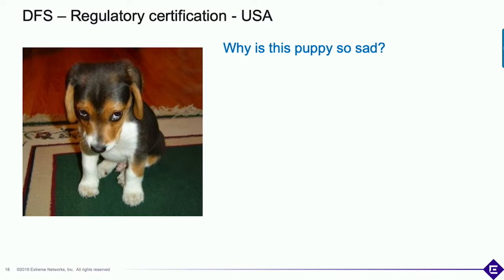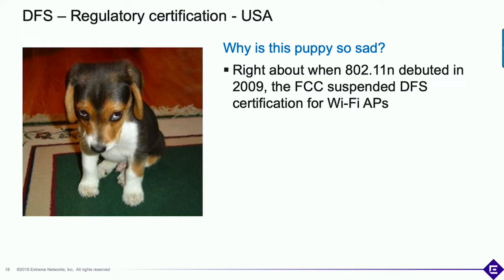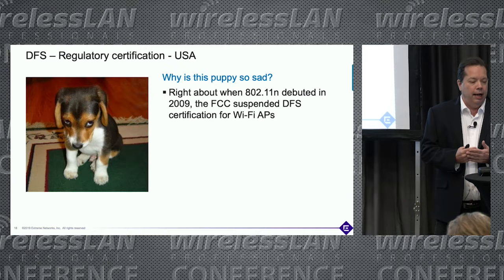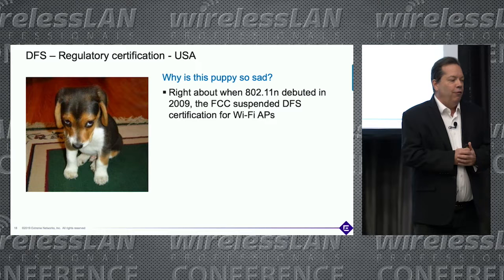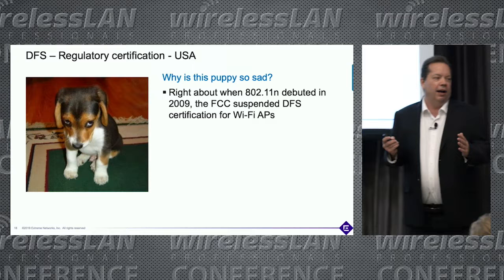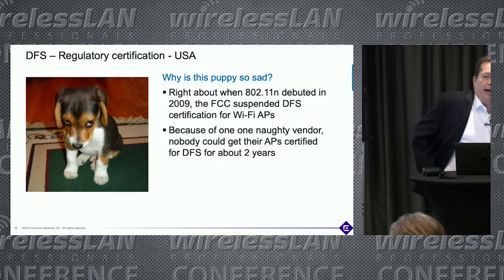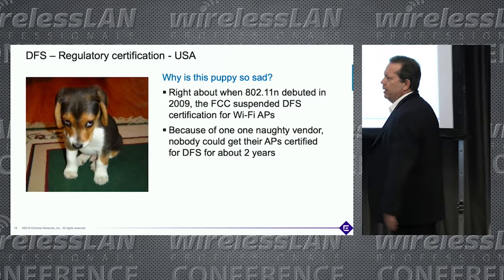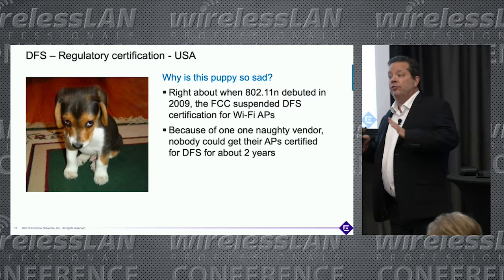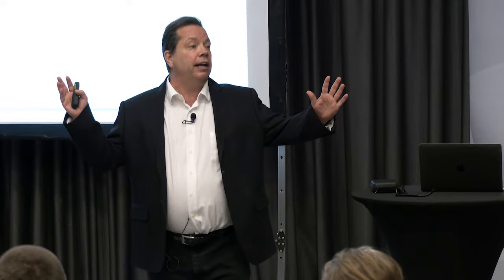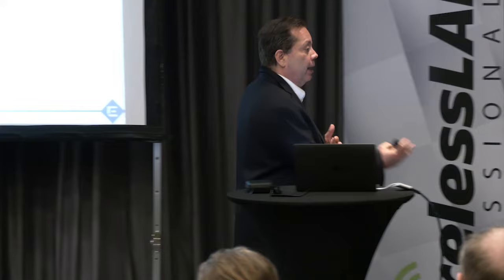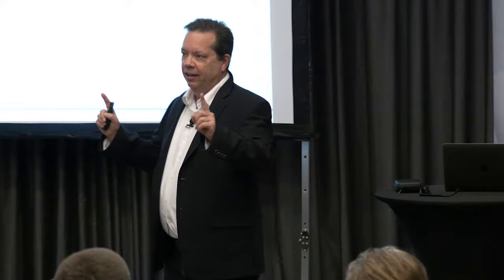Right around when 802.11n debuted in 2009, the FCC actually suspended DFS certification for about two to three years. It was caused by one naughty vendor that had an outdoor AP that interfered with a radar near an airport or military base. It pissed off the FAA and the FCC, and at the end of the day they said they're not certifying any more APs until they take another look. The result was that new 802.11n APs and clients couldn't use DFS channels for about three years in the United States.